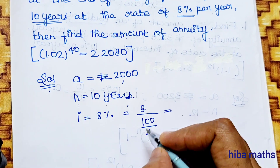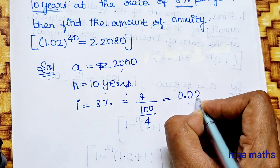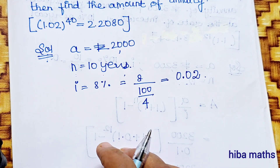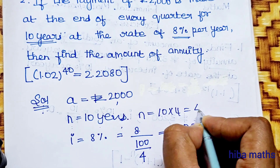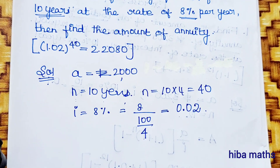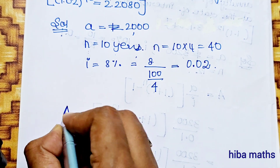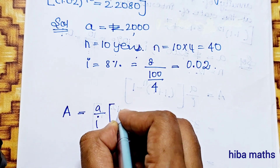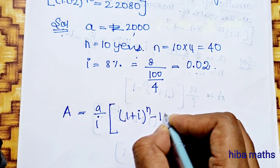The interest rate per quarter is 0.02. The number of periods n equals 10 into 4, which equals 40 quarters. Applying the formula: A equals a by i, times (1 plus i) to the power n minus 1. Substituting a equals 2000, i equals 0.02, n equals 40.